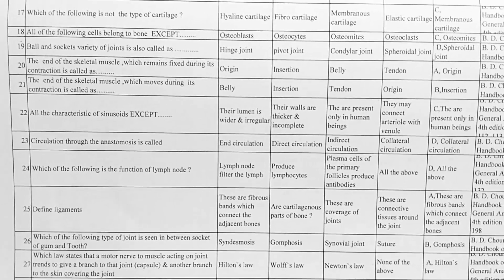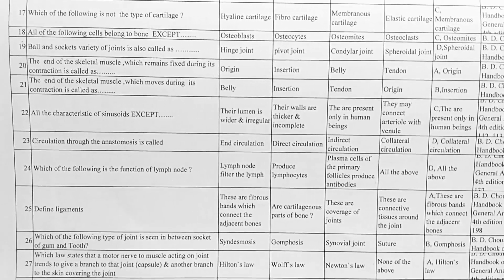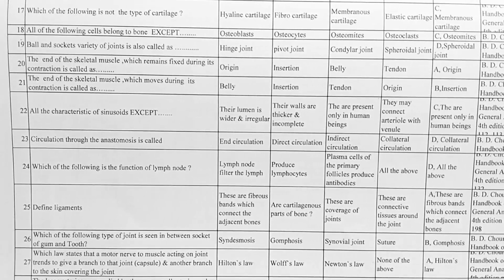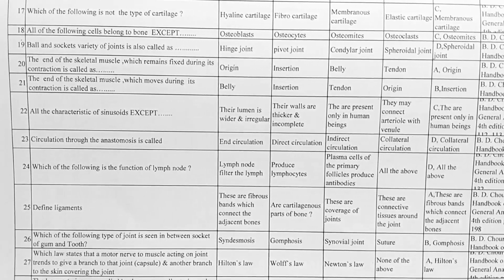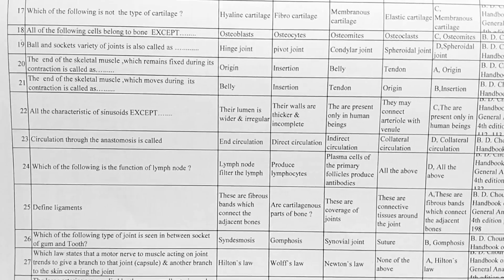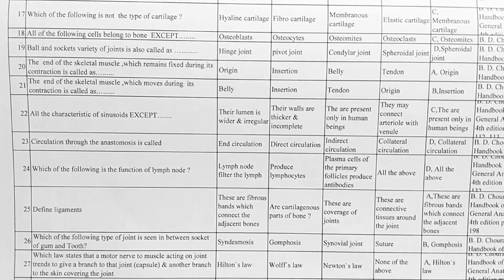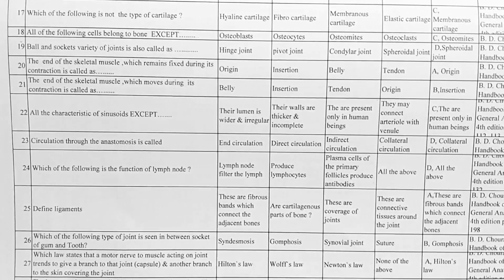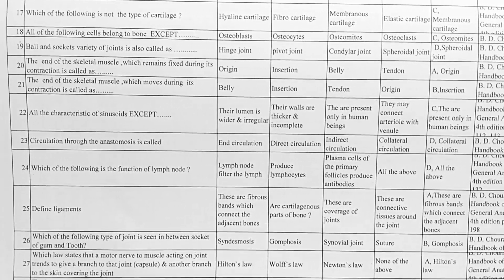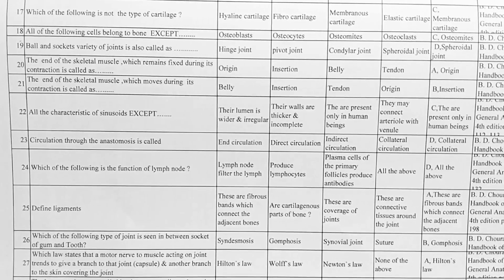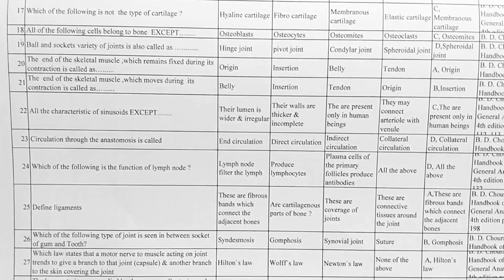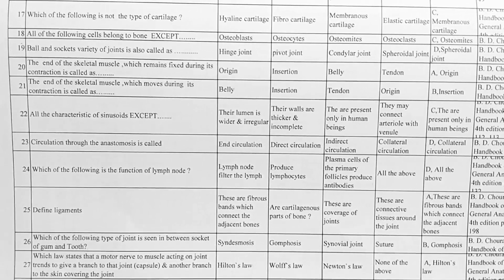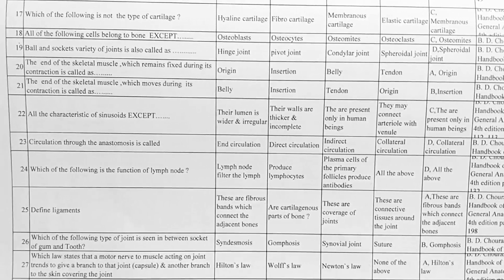Next, ball and socket variety of joint is also known as — options: A. hinge joint, B. pivot joint, C. condylar joint, D. spheroidal joint. Correct answer is option D, spheroidal joint.